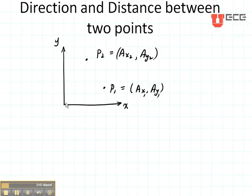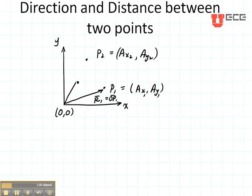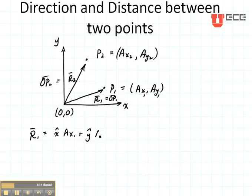So what we're going to do is draw two vectors. We're going to begin both vectors at the origin and they're going to go to the point that they represent. So R1 is going to be the distance from the origin to point P1, and R2 is going to go from the origin to P2. R1 is going to be X-hat times AX1 plus Y-hat times AY1, and R2 is going to be X-hat times AX2 plus Y-hat times AY2.